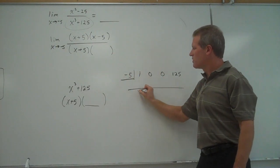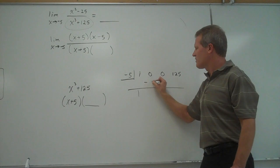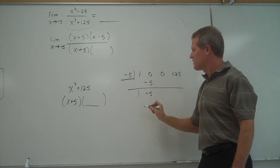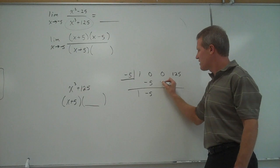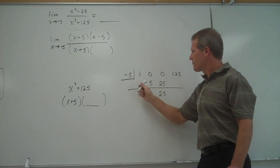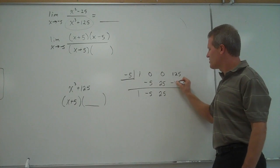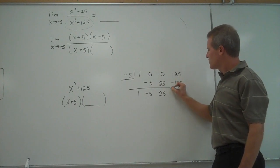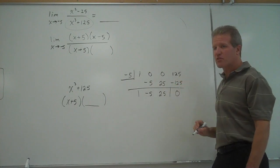I bring down the 1 and multiply by negative 5. I add those, I get negative 5. Negative 5 times negative 5 is 25. I add to get 25. I multiply negative 5 times 25 is negative 125. This last answer is my remainder. So I get a remainder of 0.